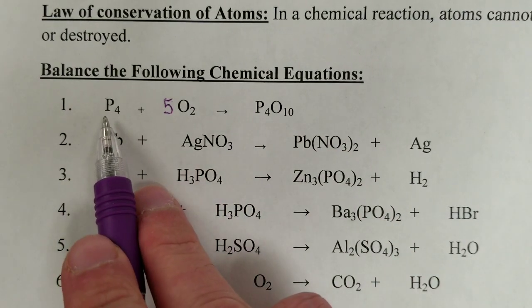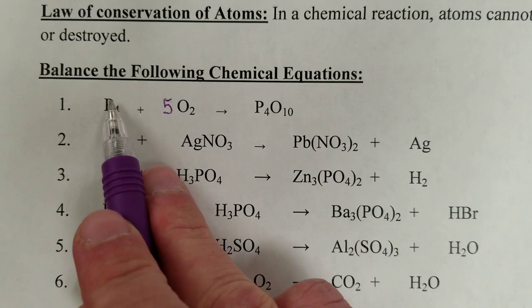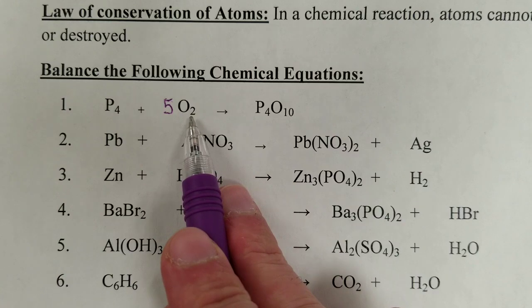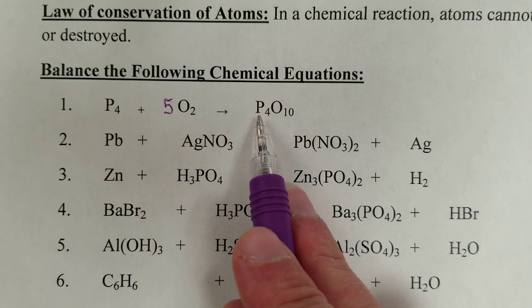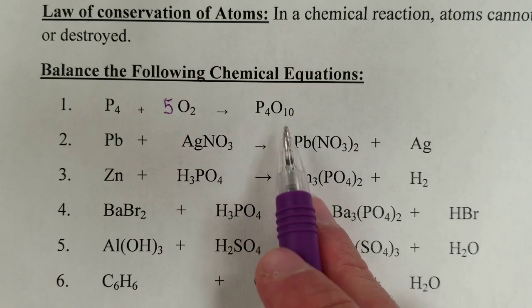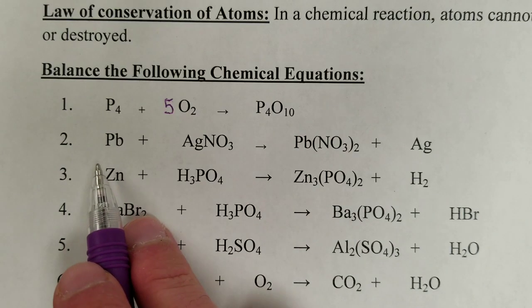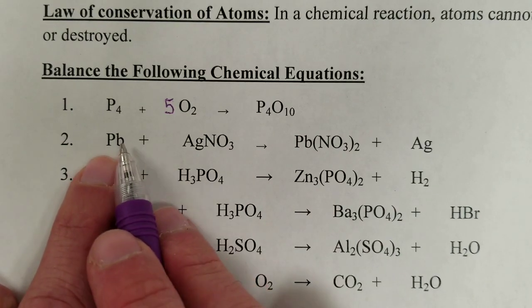And we're saying that one phosphorus molecule, which is comprised of four phosphorus atoms, reacts with five oxygen molecules, each one containing two oxygen atoms, to make a single molecule that's this. Now, as we look at these other ones, we've got to follow the same principles through.